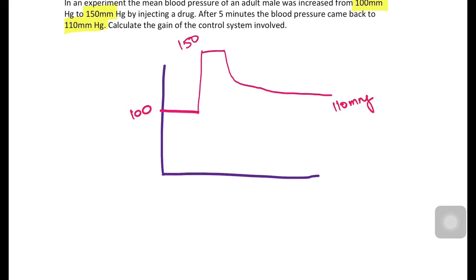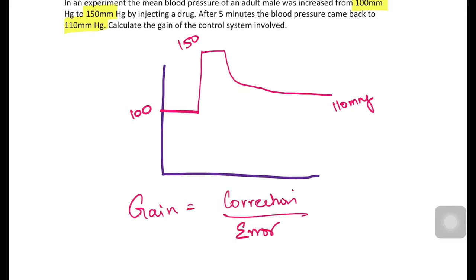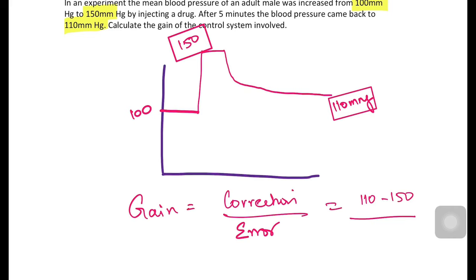Applying the formula — gain equals correction divided by error — the correction is the final corrected value minus the original value before correction was applied: 110 minus 150. The error is the remaining difference between the corrected value and the original set point: 110 minus 100.